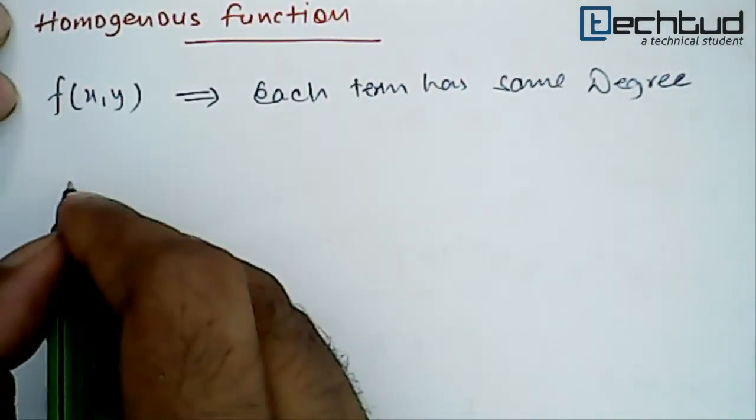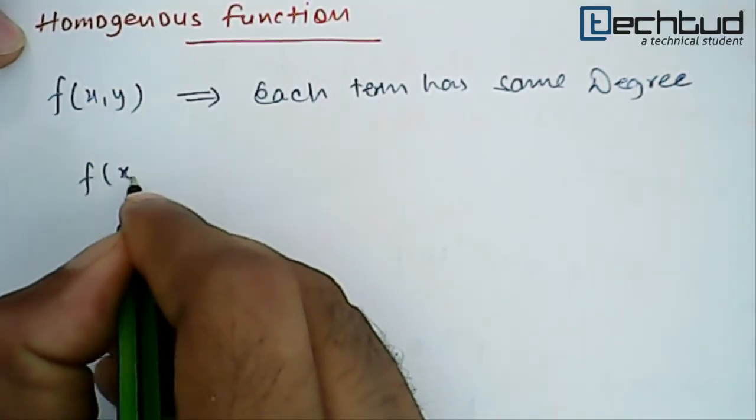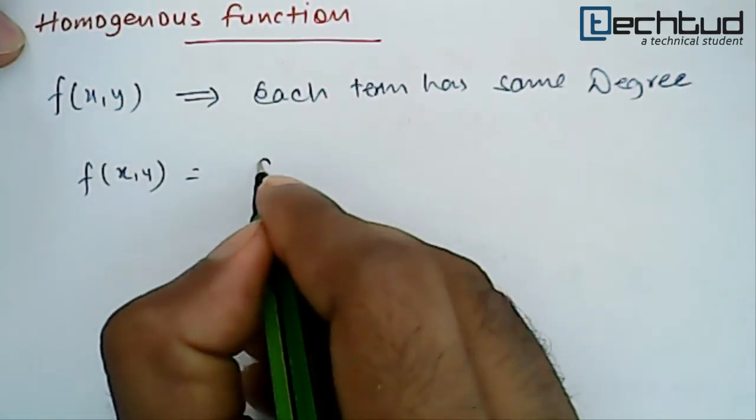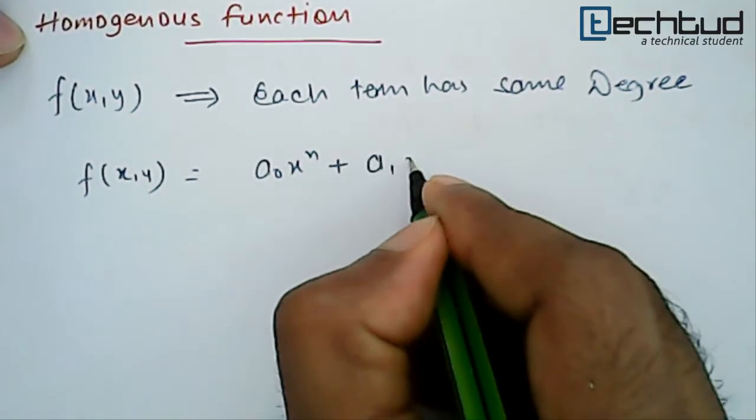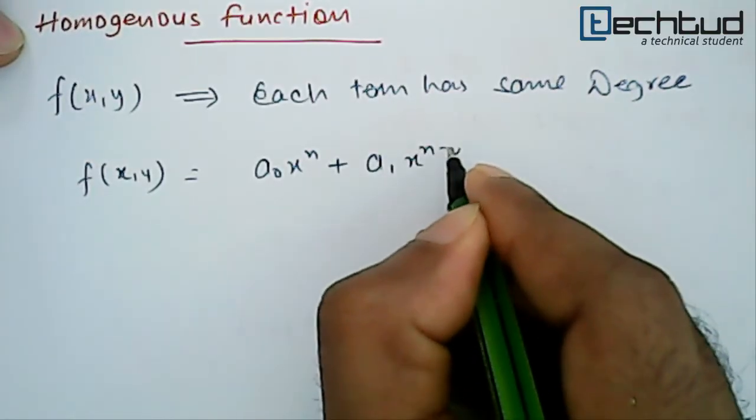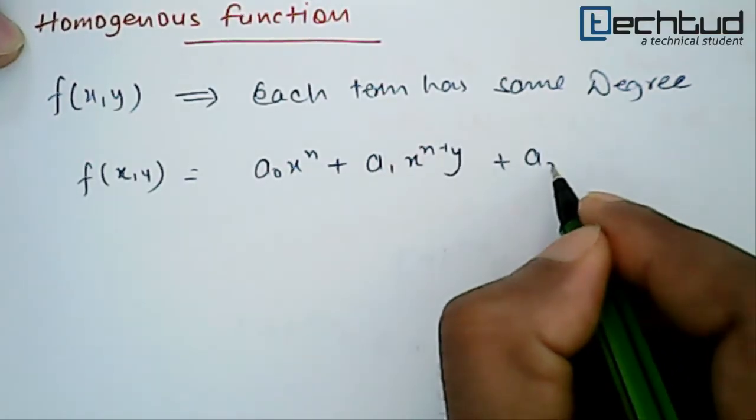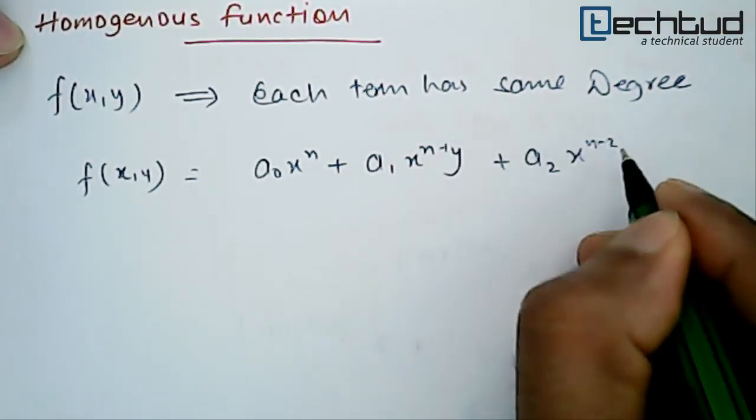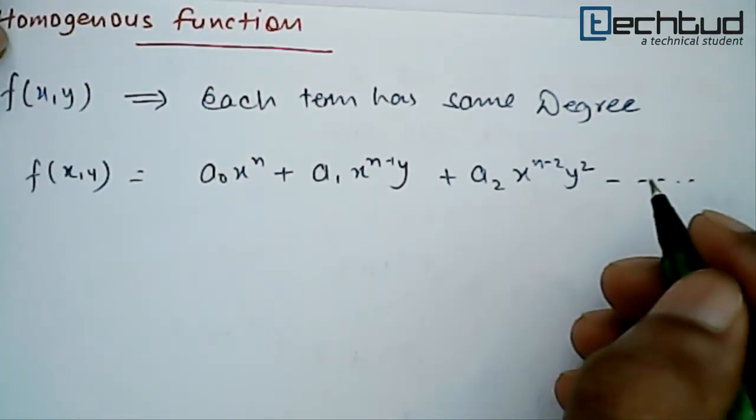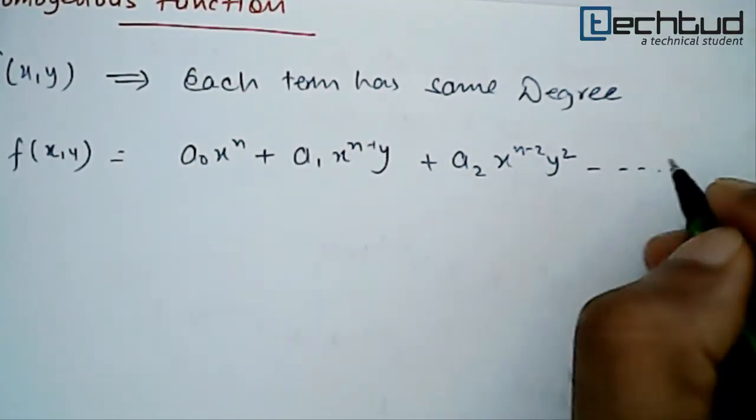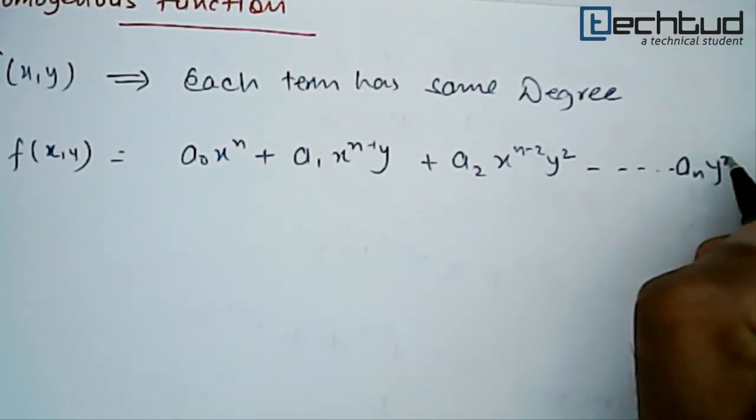So for example, f(x,y) equals let's say a₀x^n plus a₁x^(n-1)y plus a₂x^(n-2)y² and so on. That will be up to aₙy^n.